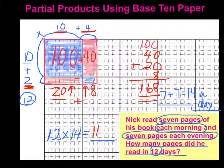That's 168. So the answer to the problem, 12 times 14 is 168. So Nick would read 168 pages in the 12 days. If you are interested in checking that problem, you can easily do so using crisscross or box method. And that's it.